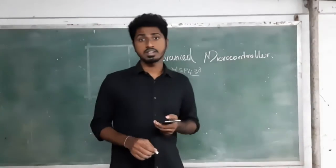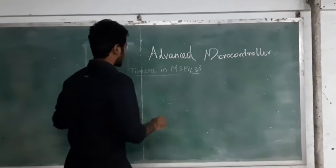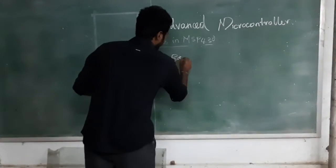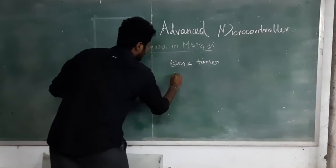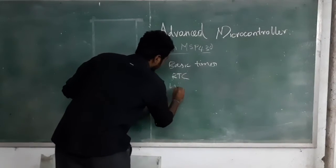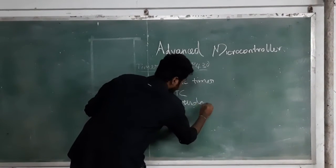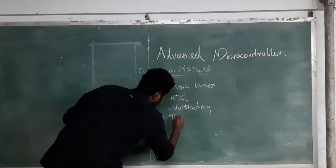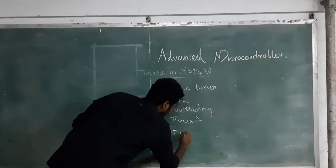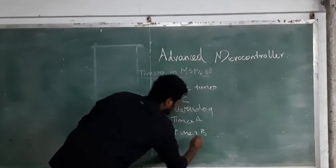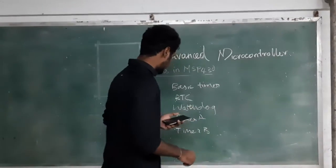In MSP430 there are 5 types of timers: the basic timer, RTC, watchdog timer, timer A, and timer B. In this lecture we are going to see about timer A and timer B.